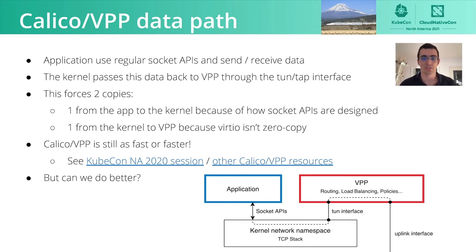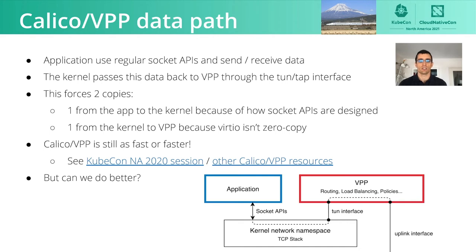One thing to note is that this forces two copies of the data: a first copy when the data is sent by the application (which you'd also get with regular Calico from the socket API), and a second copy when the data goes back to VPP in userspace. This extra copy is a source of inefficiency, but VPP is tailored to the requirements of this use case and is faster than the kernel, so it more than makes up for the extra copy. As shown in previous talks, it is as fast or faster than the other data planes in most situations, so this is a good default — the VPP data plane is completely transparent for users.